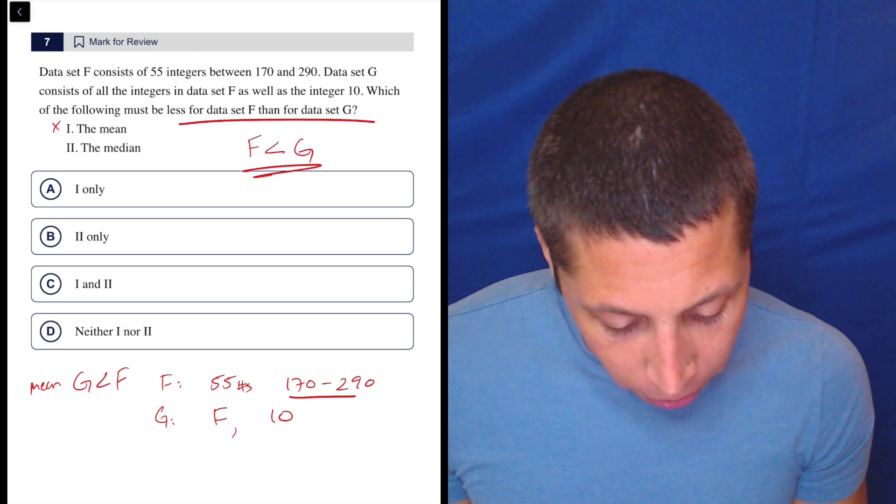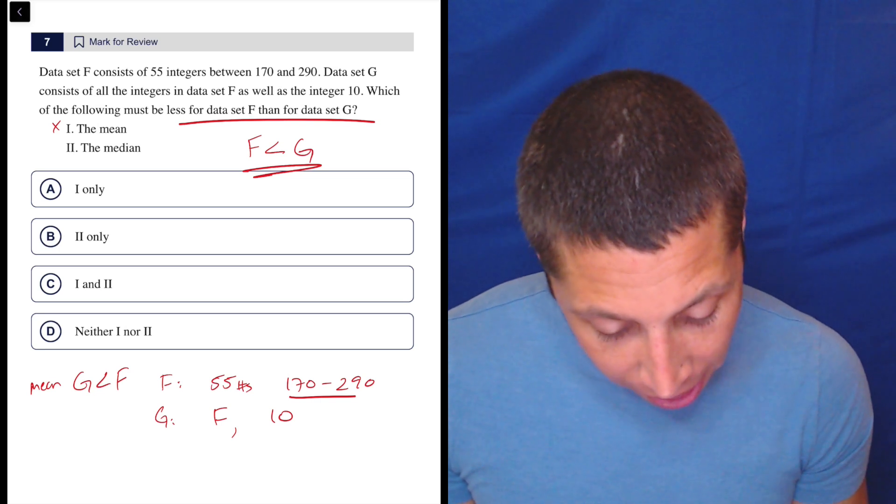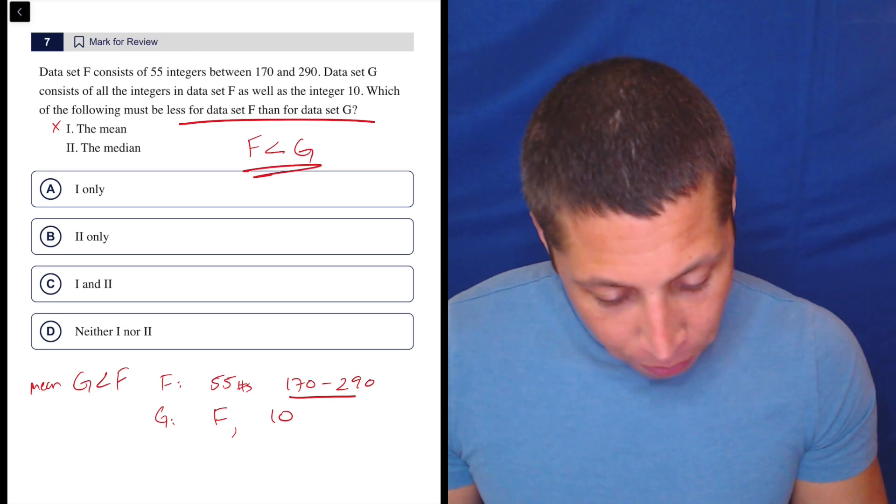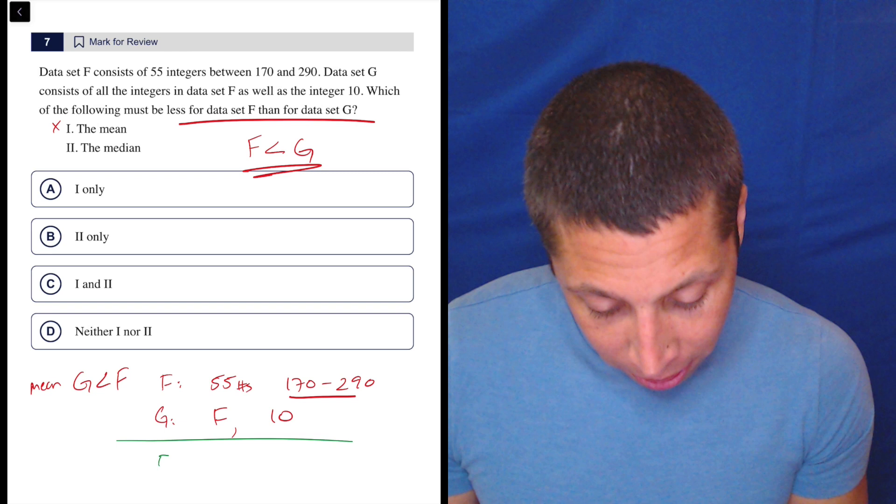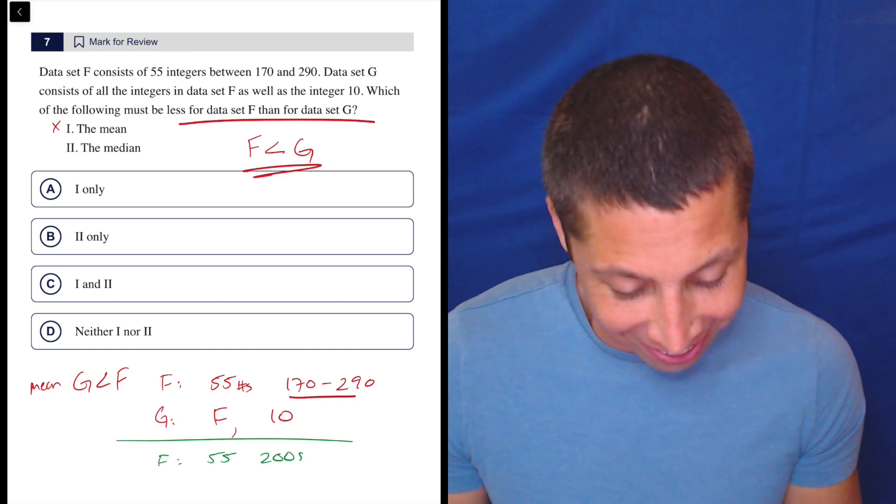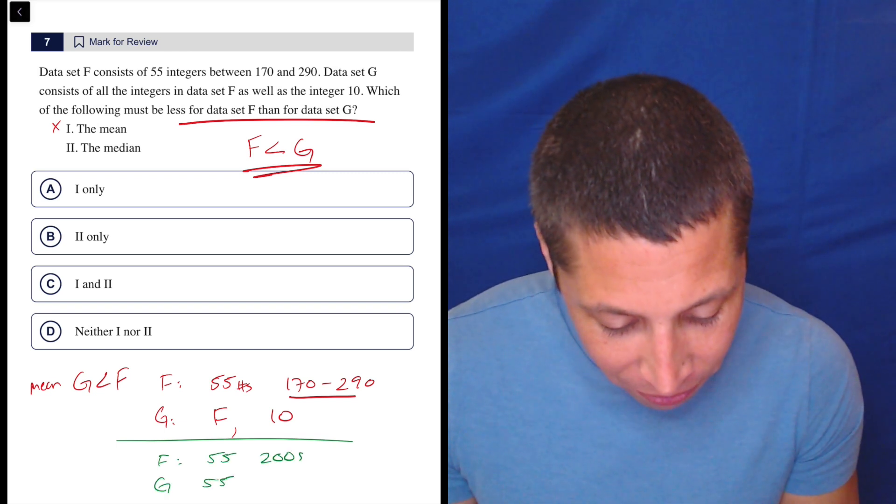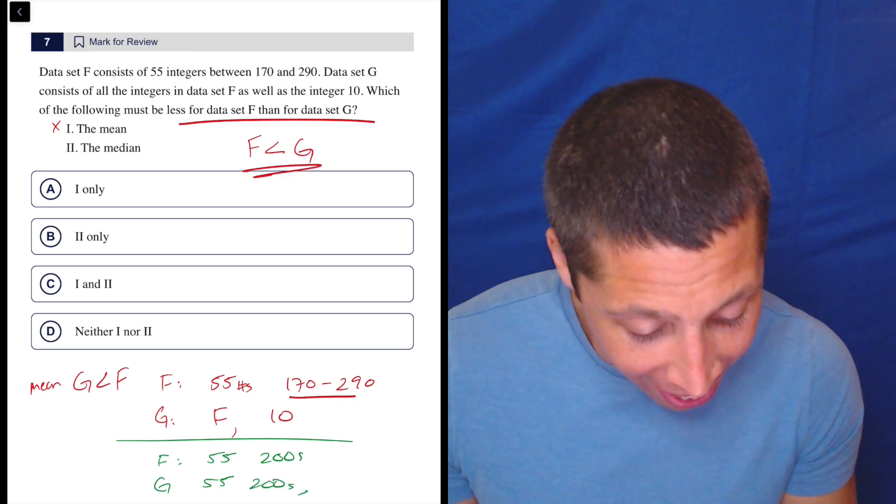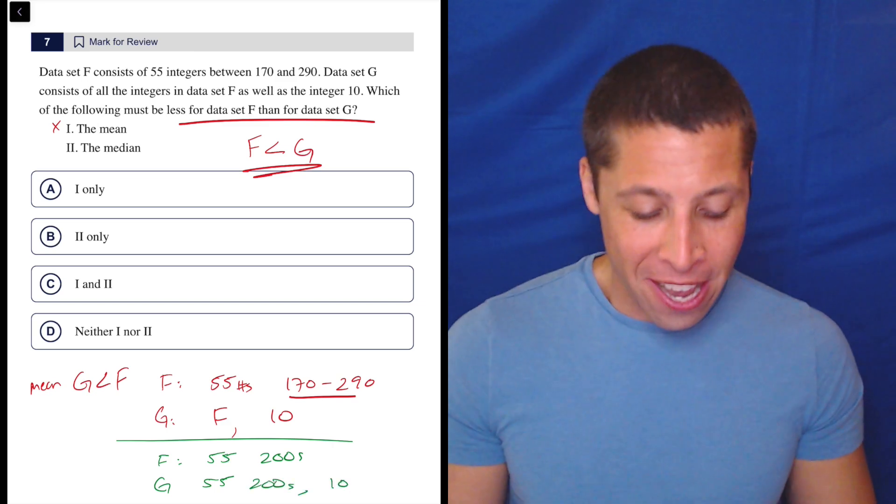So if we added a new number, how can I write this? So if F were just a bunch of 200s, so let's do it down here maybe. F is 55, 200s. Let's just leave it like that. G is 55, 200s and a 10. Well, think about how that would look if we just wrote all those numbers out.